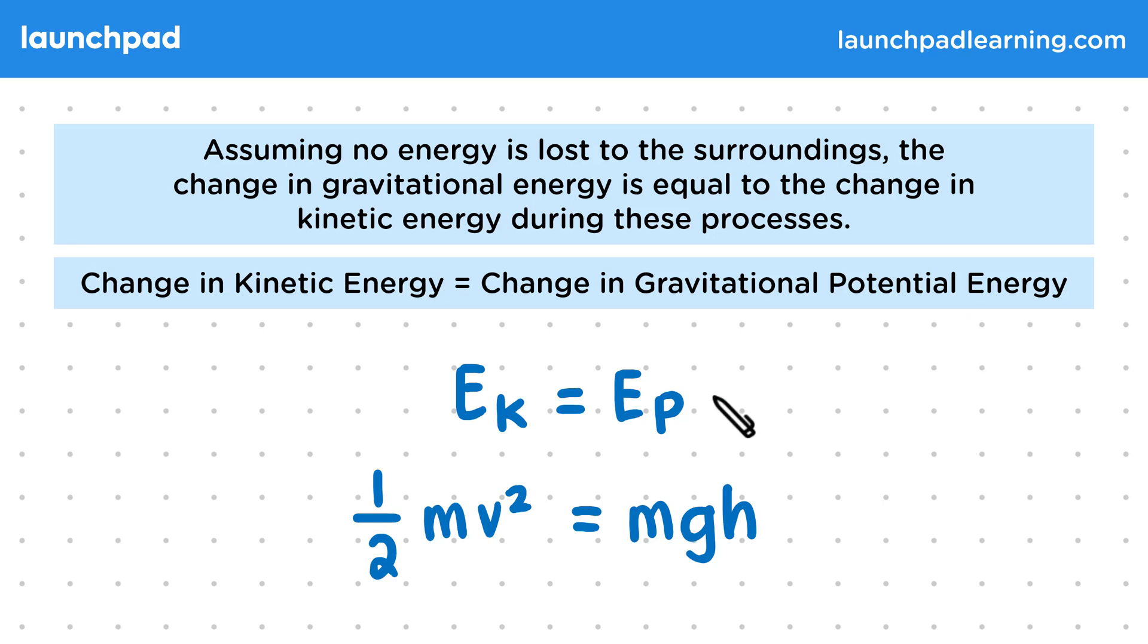But remember that the gravitational potential energy equation only applies near the surface of a planet. We can also cancel out the masses to simplify the equation further.